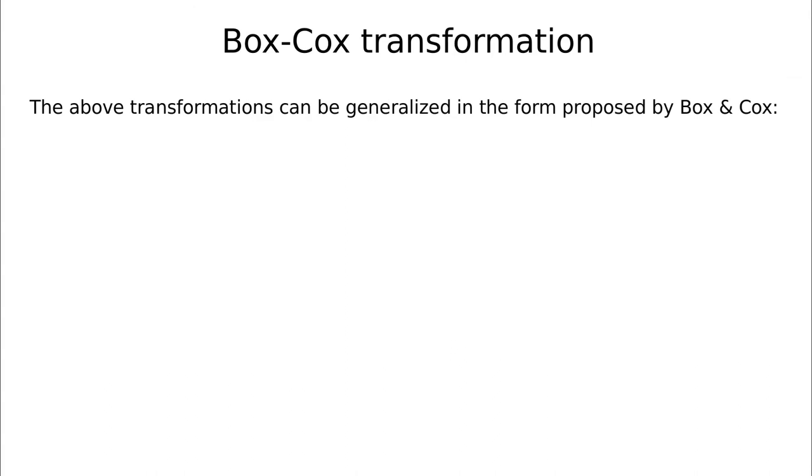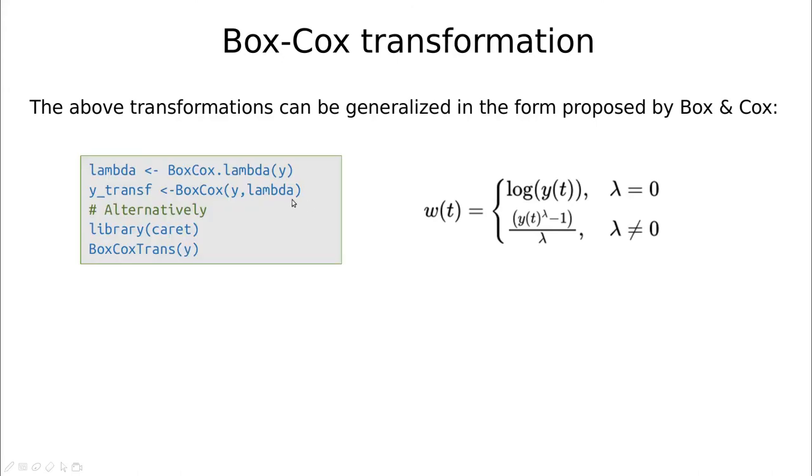If you remember, we have discussed previously the box-cox transformation, which is a summary of all these transformations, and essentially in this formula, you contain all the transformations that I have done before. So you can do this using the forecast library, using the box-cox-lambda. This estimates which is the best one, and this box-cox function applies this transformation, or alternatively, you can use this in the library caret that we have used in the past, using the box-cox transformation.